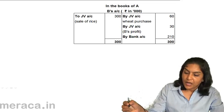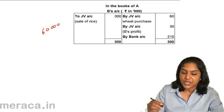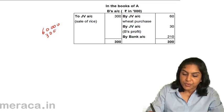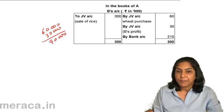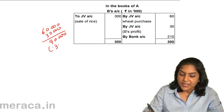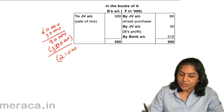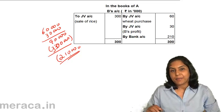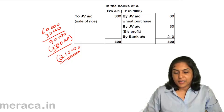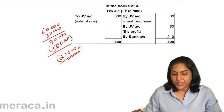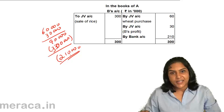B incurred ₹60,000 in cost for the purchase of wheat, and B's share of profit is ₹30,000. So B needs to be compensated ₹90,000 in total. On the other hand, B received ₹3,00,000 on the sale of rice and has to pay that back. Therefore, the difference of ₹2,10,000 has to be remitted by B to A. Short questions like these can be tackled directly without preparing full journal entries and ledger accounts.